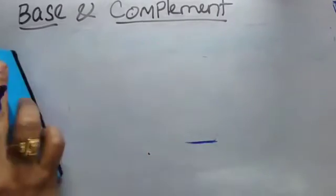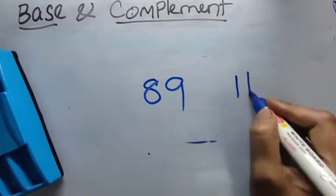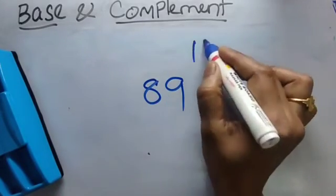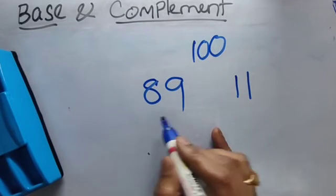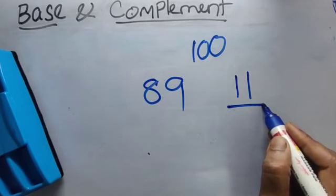Let's see, what is the complement of 89? It's 11. Because the base I am considering is 100. So 100 less 89, the difference is 11. Difference is nothing but we can say it's a complement.